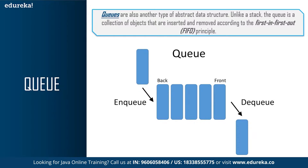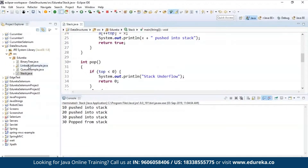Queue supports two fundamental operations: enqueue and dequeue. Enqueue means you insert the element at the rear of the queue, and dequeue means remove and return the element from the front of the queue. Whatever element you insert at the rear end will eventually come to the front. Queues are used in the asynchronous transfer of data between two processes, CPU scheduling, disk scheduling, and other situations where resources are shared among multiple users and served on a first-come-first-serve basis.